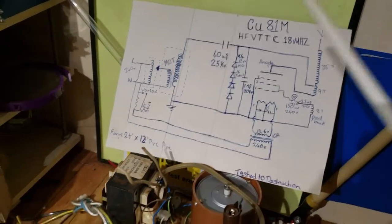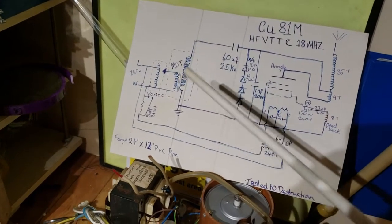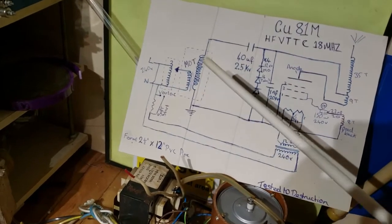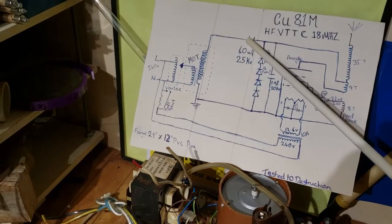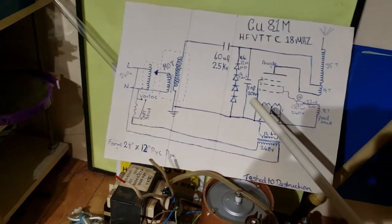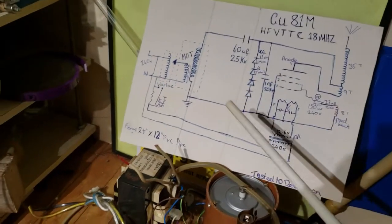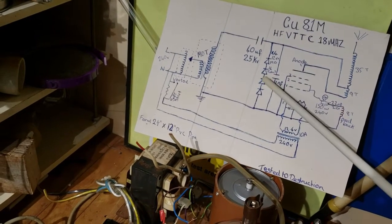So what we have here is a variac that feeds a microwave oven transformer to step up the voltage. This steps up the voltage to about 2.2 thousand volts. Then we have a voltage doubler circuit comprising of this capacitor and these diodes. This obviously then doubles the voltage to around 4.4 kV. This is just a little cap across them to protect these diodes. This is a bypass capacitor for the RF.